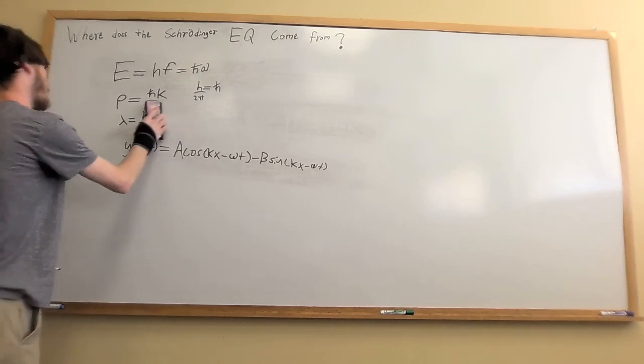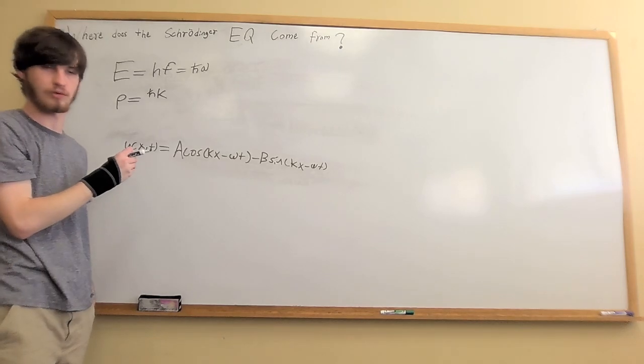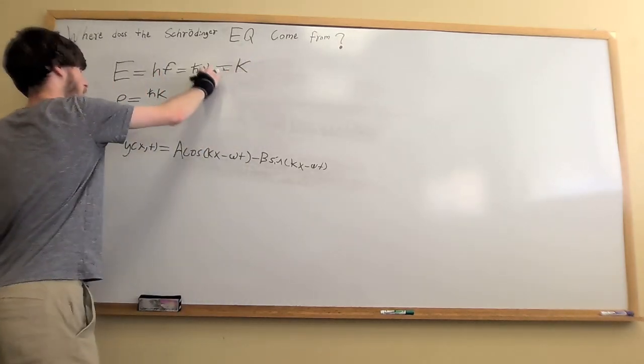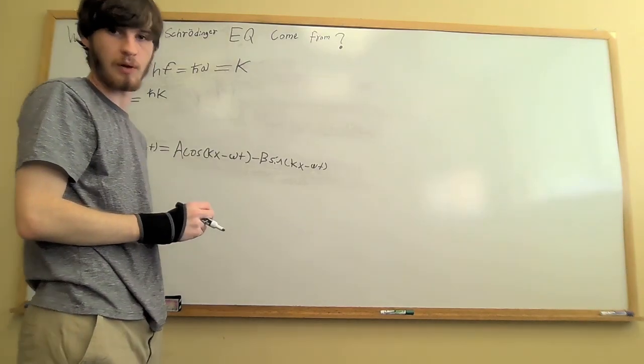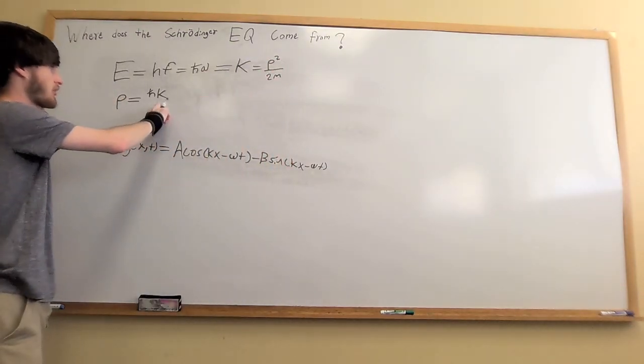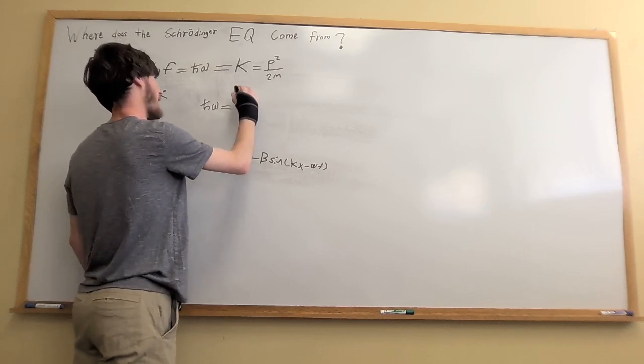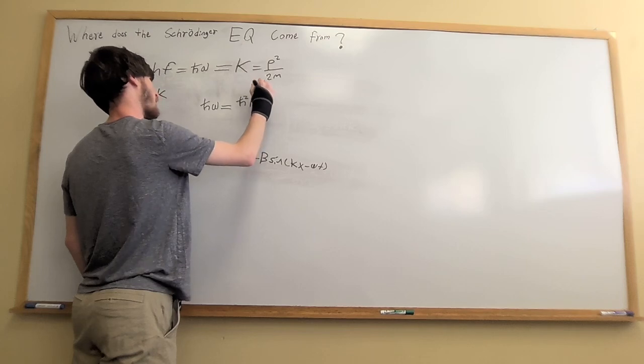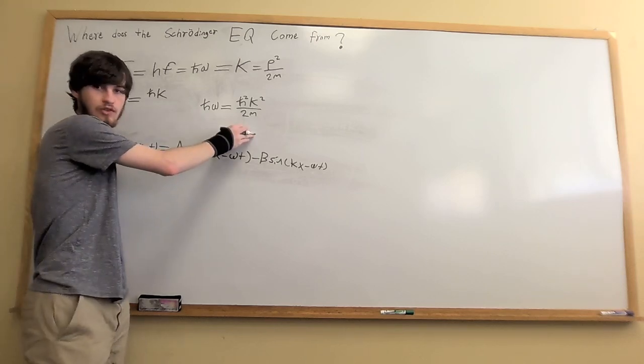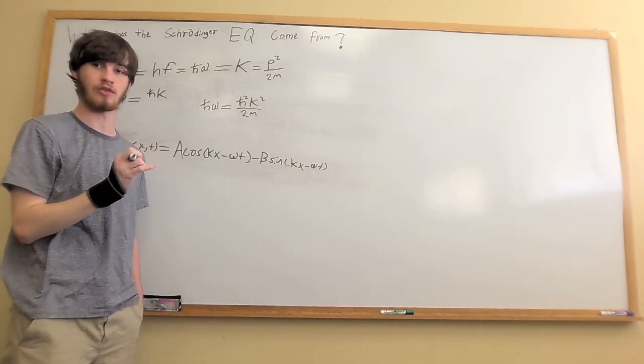Now if we want to move on from this, the particle is in free space where there's no potential, so this means all of its energy is kinetic energy. We now know that the kinetic energy can be represented by p squared over 2m. We have p defined in terms of the wave number and a constant. Let's plug it in. We have h bar omega equals h bar squared k squared over 2m. Now we're going to use this to show how the wave function for a quantum object is going to have a first-order time derivative versus a second-order as usual.